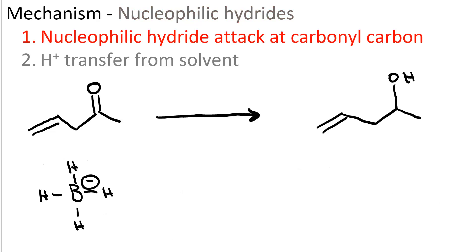The first step of our mechanism is nucleophilic attack by the borohydride at the carbonyl carbon. This exceeds the octet on the carbonyl carbon, and so we have to change this pi bond into a lone pair. As a result, we get an alkoxide, and we need some weak acid to protonate it.